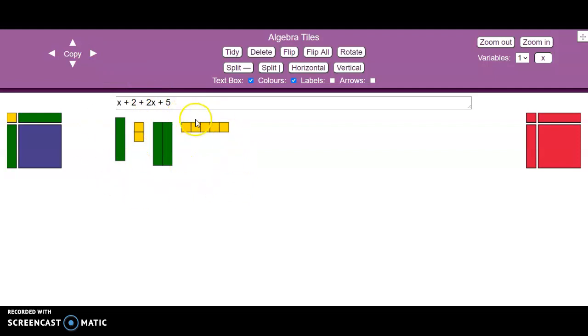So if we're collecting them up, to simplify the expression, we'll put all the 1s together, all the green ones together, and you can see that we have 3x plus 7.